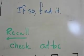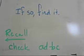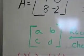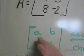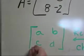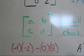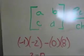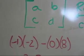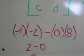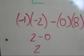And we're going to check AD minus BC. In other words, we're going to multiply on the diagonals, AD and BC, and subtract those products. So we want to do negative 1 multiplied by negative 2, minus 0 multiplied by 8. That's going to give me 2 minus 0, which is 2.